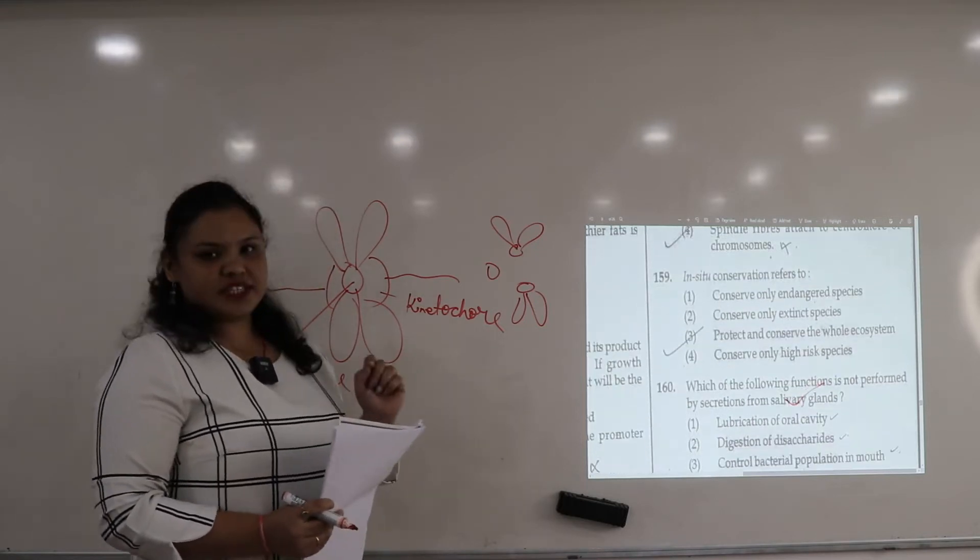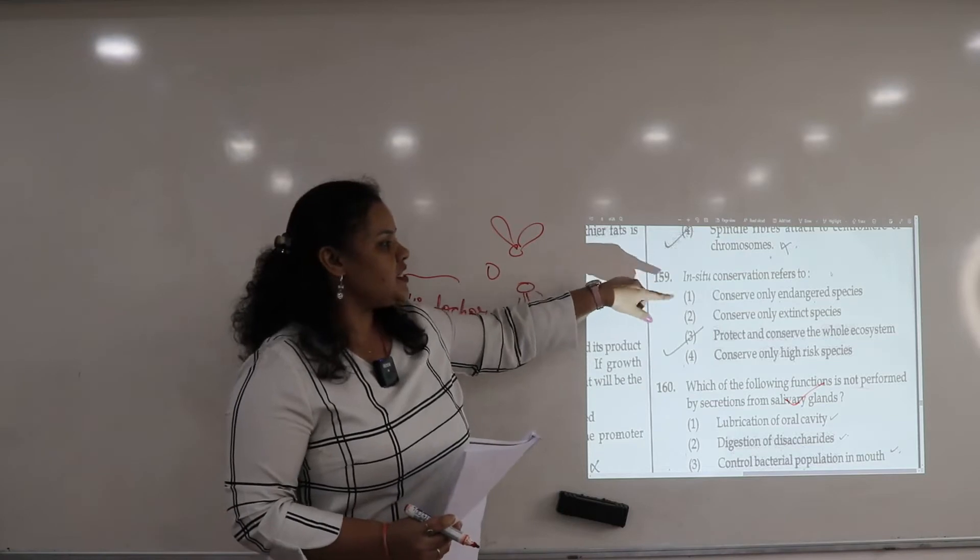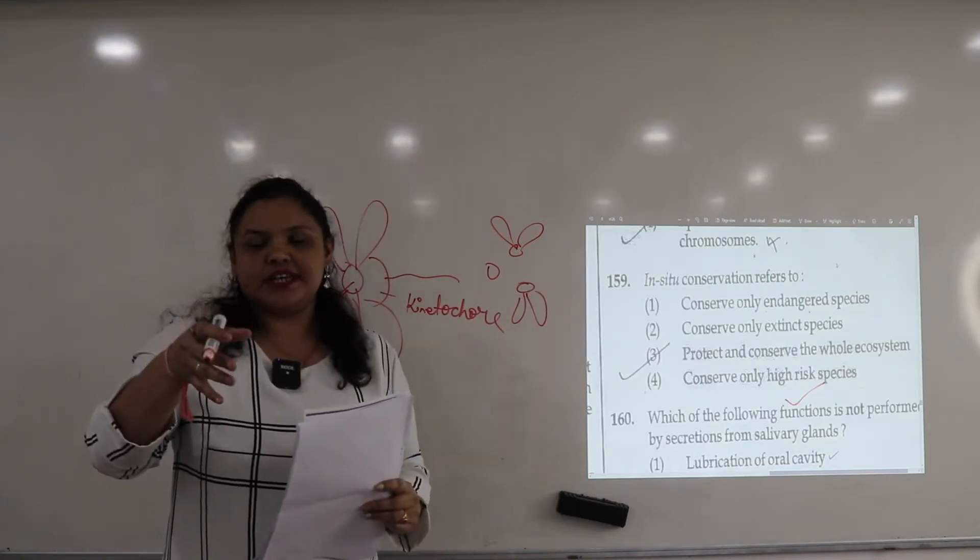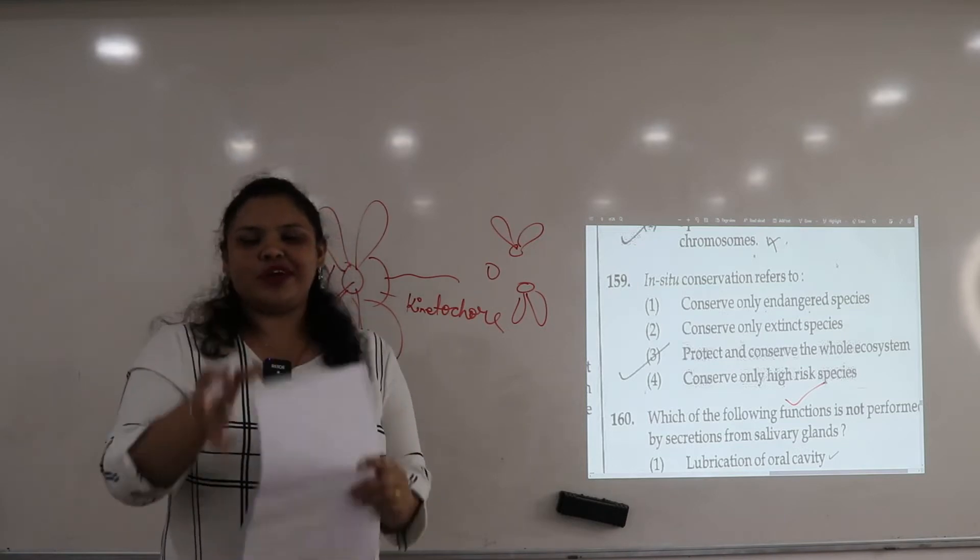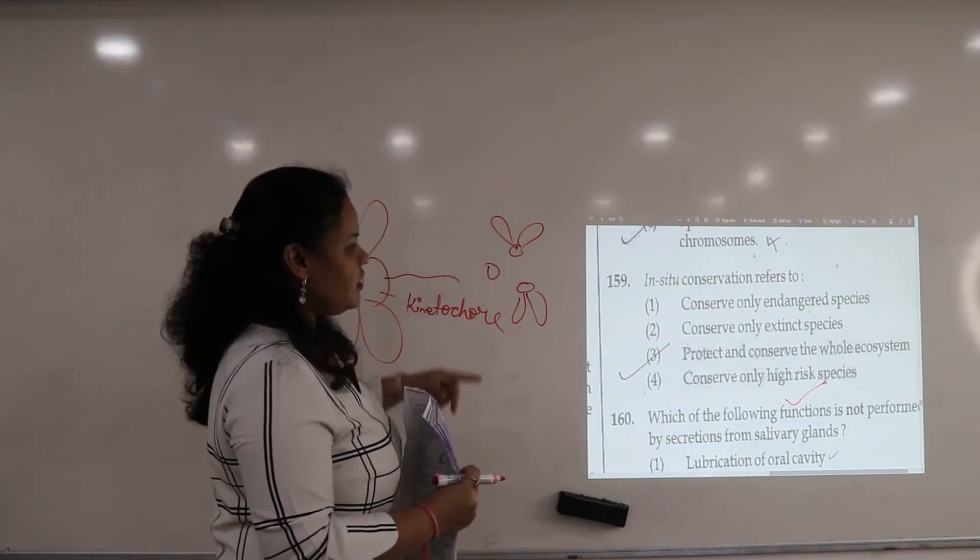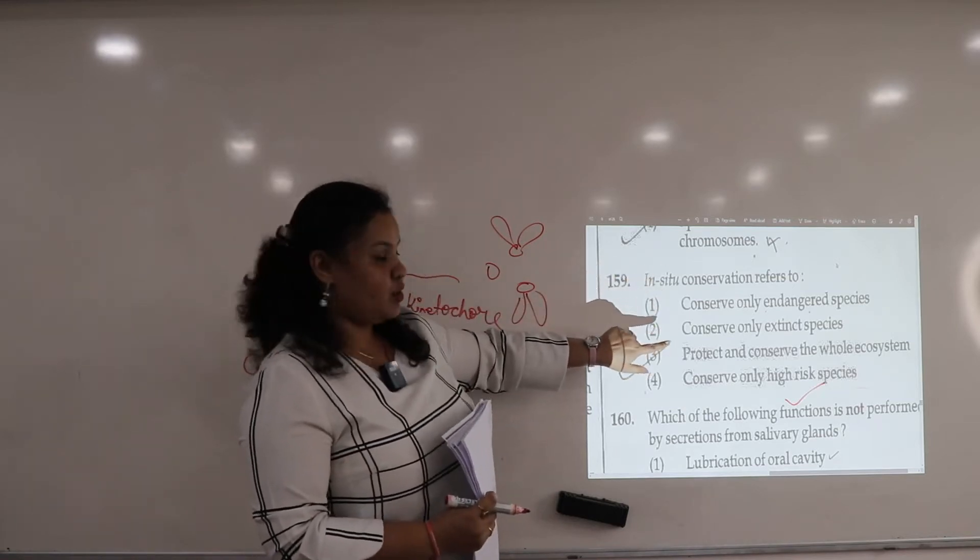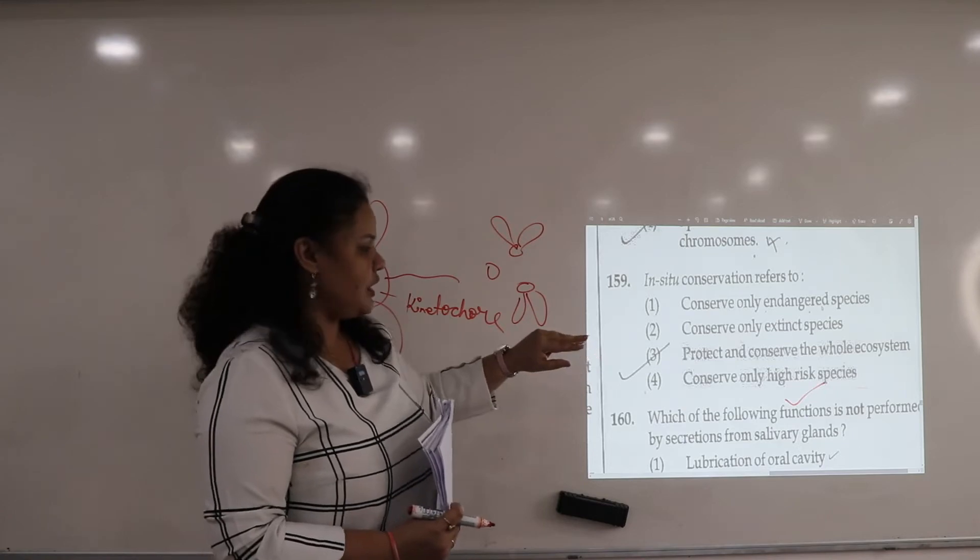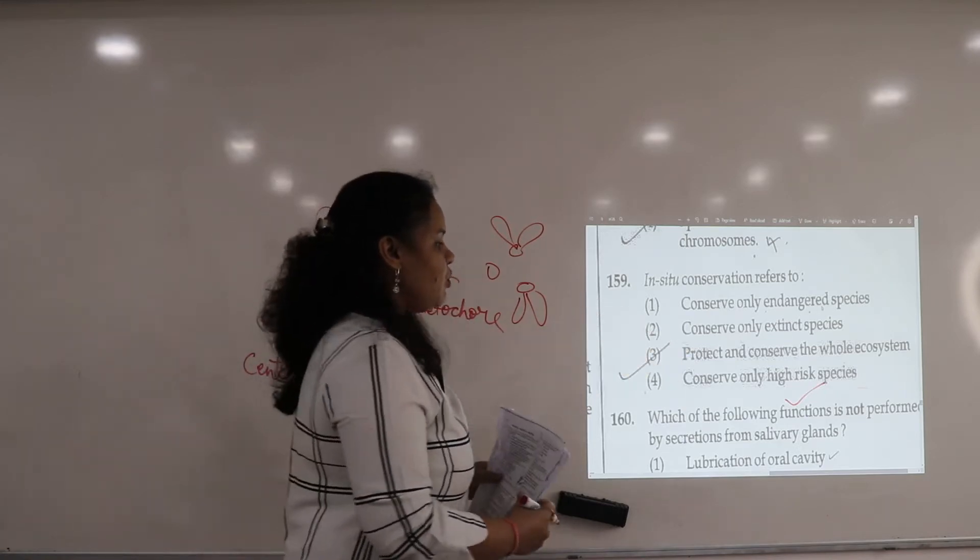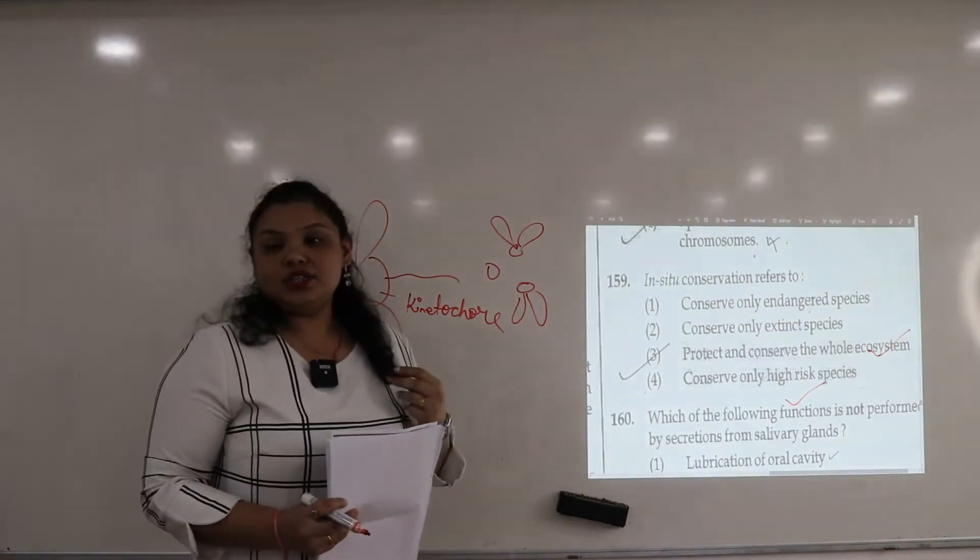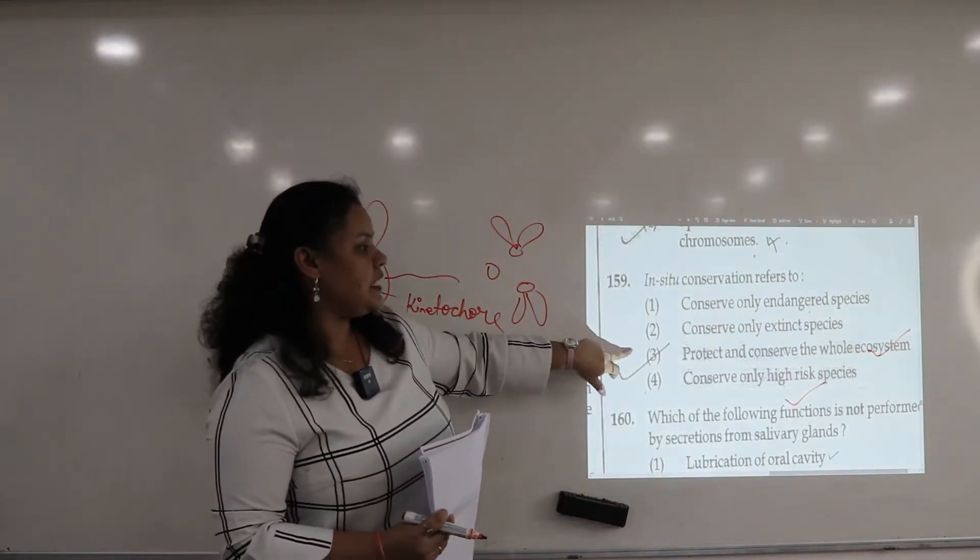A very simple question, 159. In-situ conservation refers to - the biodiversity, the organism, wherever it is, keeping it there and conserving it. The right answer for this question: conserve only endangered species? No. Extinct species? This will not go. This point of definition does not go. Protect and conserve the whole ecosystem. The point is right. So the right option will be third.